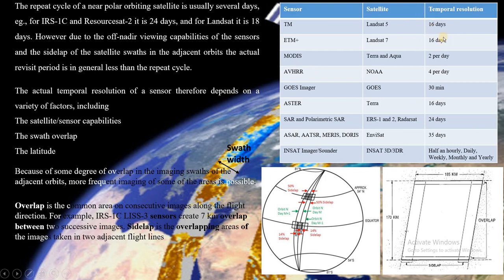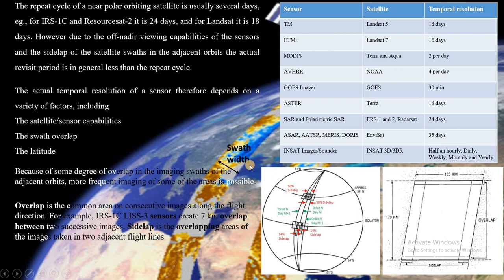Some more factors determine the temporal resolution of different satellites, such as viewing capability of the sensor, swath, overlap, and latitude. The footprint of a satellite — what we see on the background image — is generally called a swath in remote sensing. The width of this footprint is called the swath width.